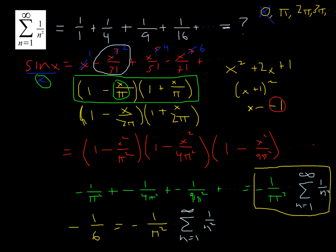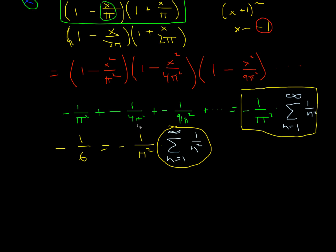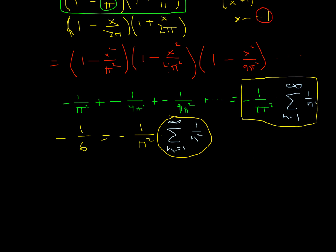We can now set them equal: negative 1 over 6 — which is 3 factorial — equals negative 1 over pi squared times the infinite sum of 1 over n squared, starting with n equals 1. We can isolate this sum by multiplying both sides by negative pi squared. Eventually, we get pi squared over 6 equals the infinite sum of 1 over n squared starting with n equals 1. And that is the answer.